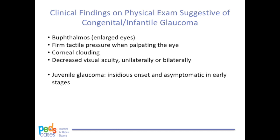There are a number of findings on physical exam suggestive of glaucoma that can be readily observed by a general physician. Buphthalmos, or enlarged eyes — the affected eyes can become enlarged because collagen in the sclera and cornea can stretch from increased IOP. This enlargement does not occur in adult glaucoma. Firm tactile pressure when palpating the eye. Corneal clouding, however, can depend on how acute the pressure elevation is. When there is an acute IOP rise, children will present with corneal clouding, which may also be present at birth. Firm tactile pressure in these cases can be helpful in differentiating other causes of corneal opacification.